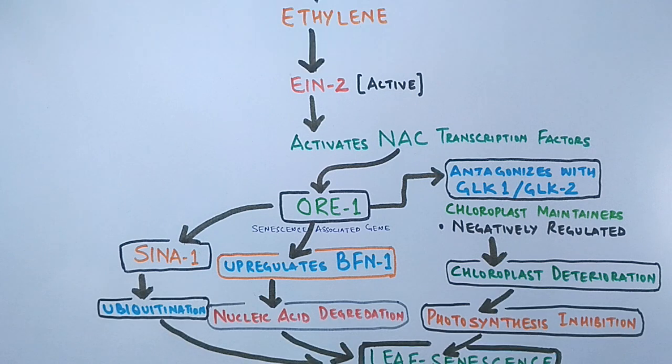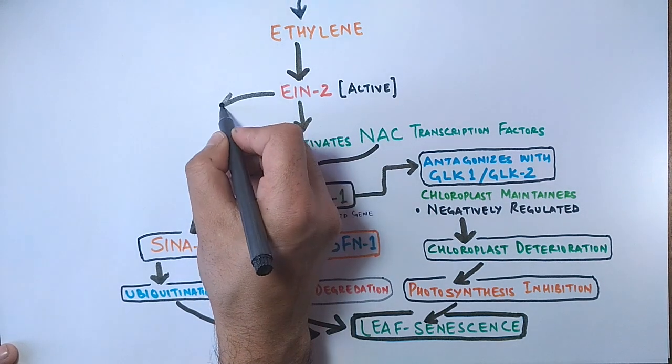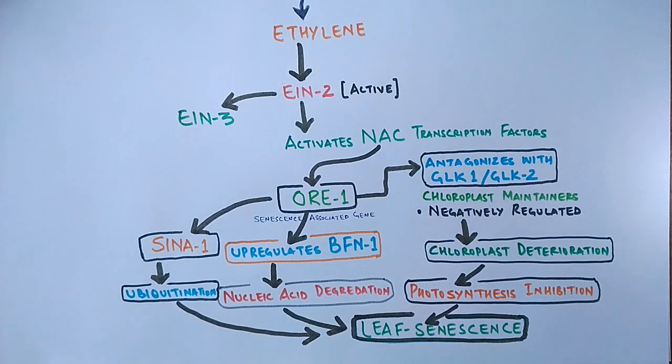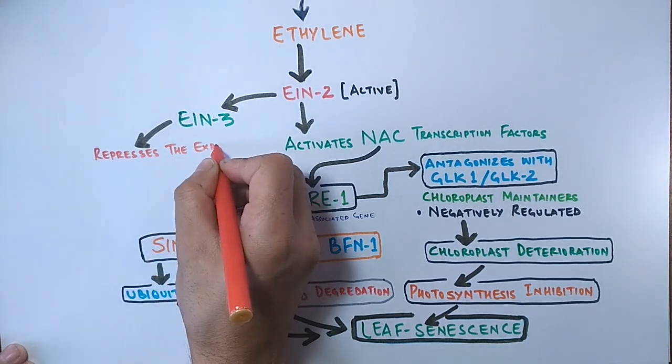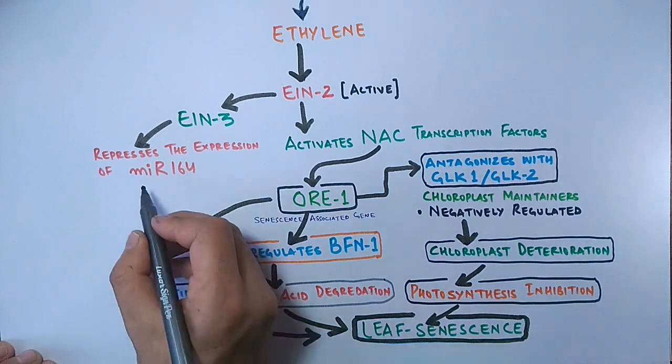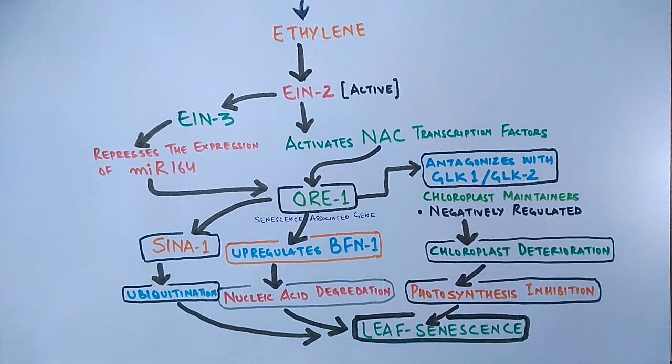Now finally, we see in order to maintain the leaf senescence process, the ORE1 is upregulated another way also. We see EIN2 also activates EIN3 molecule, and this EIN3 protein represses the expression of MIR164. And the repression of MIR164 gene leads to expression of ORE1 gene because both are antagonizing each other.